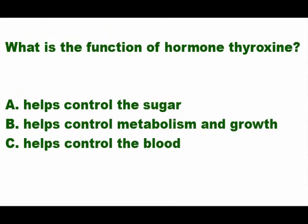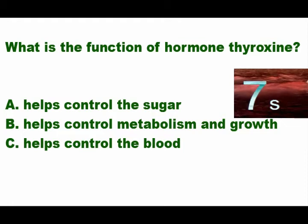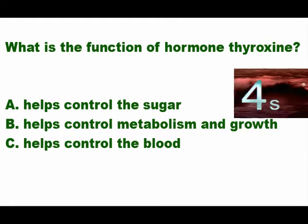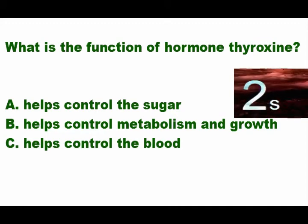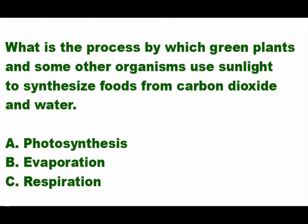Next question: what is the function of the hormone thyroxine? Is it A) help control blood sugar, B) help control metabolism and growth, or C) help control the blood? The answer is letter B — it helps control metabolism and growth.